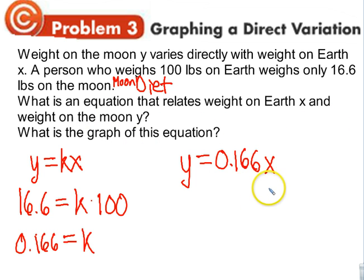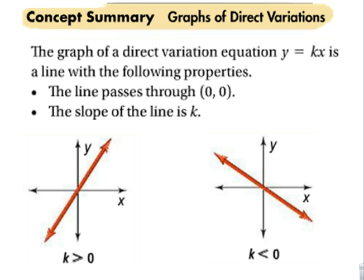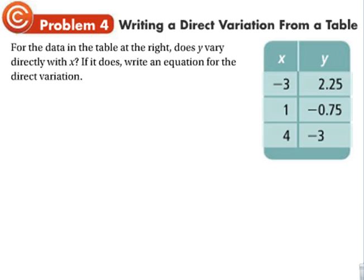If you weigh 1 pound on earth, you weigh 0.166 on the moon. If you weigh 50, multiply those together. So we can build a graph: 100 maps to 16.6, 200 maps to 33.2, and so on. The graph of a direct variation will always pass through (0, 0). K is the same as the slope — if K is positive it goes up, if K is negative it goes the other way.